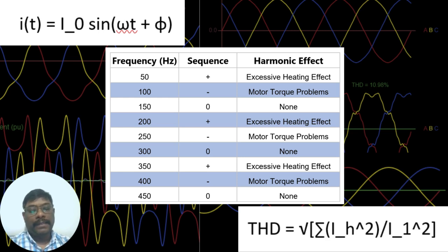The fundamental frequency, in this case a reference taken as 50 hertz, when the fundamental frequency positive sequence component increases, it produces excessive heating. That we know, when current increases, fundamental current overload or overheat causes. The second harmonic component, in this case 100 hertz, you can see it is a negative sequence component and it produces motor torque problems.